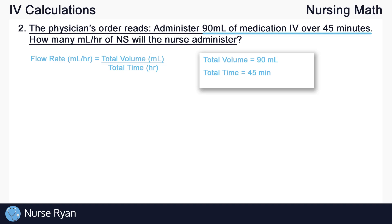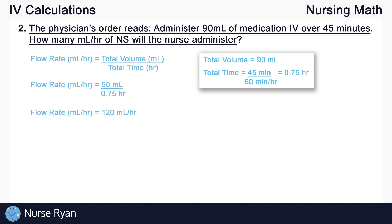Because there are 60 minutes in one hour, to convert from minutes to hours we simply divide by 60 minutes per hour. We take 45 minutes divided by 60 minutes per hour — the minutes cross out, leaving us with 0.75 hours. Now that we have milliliters and hours, we can fill in our formula: flow rate equals 90 mils divided by 0.75 hours, which gives us an answer of 120 milliliters per hour.